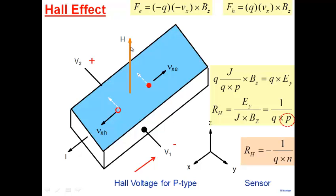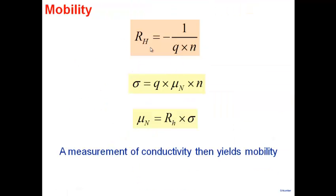We can now measure electron or hole density using the Hall coefficient. If I also measure the conductivity σ of the sample — for an n-type sample, σ = q × μ_n × n — then multiplying R_H by σ gives mobility μ directly. So having already measured the Hall coefficient, if I can also measure conductivity, I multiply them together to get mobility — two important parameters from two measurements.